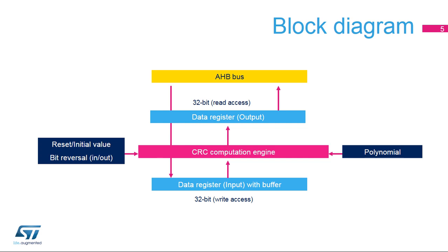The initial value, input-output bit reversal, and polynomial coefficients are configured by the software during the initialization phase before starting a new CRC calculation. The CRC computation engine will hold the result of any previous CRC calculation, which then becomes the initial value for the next calculation, thus allowing a new CRC computation of a data block.